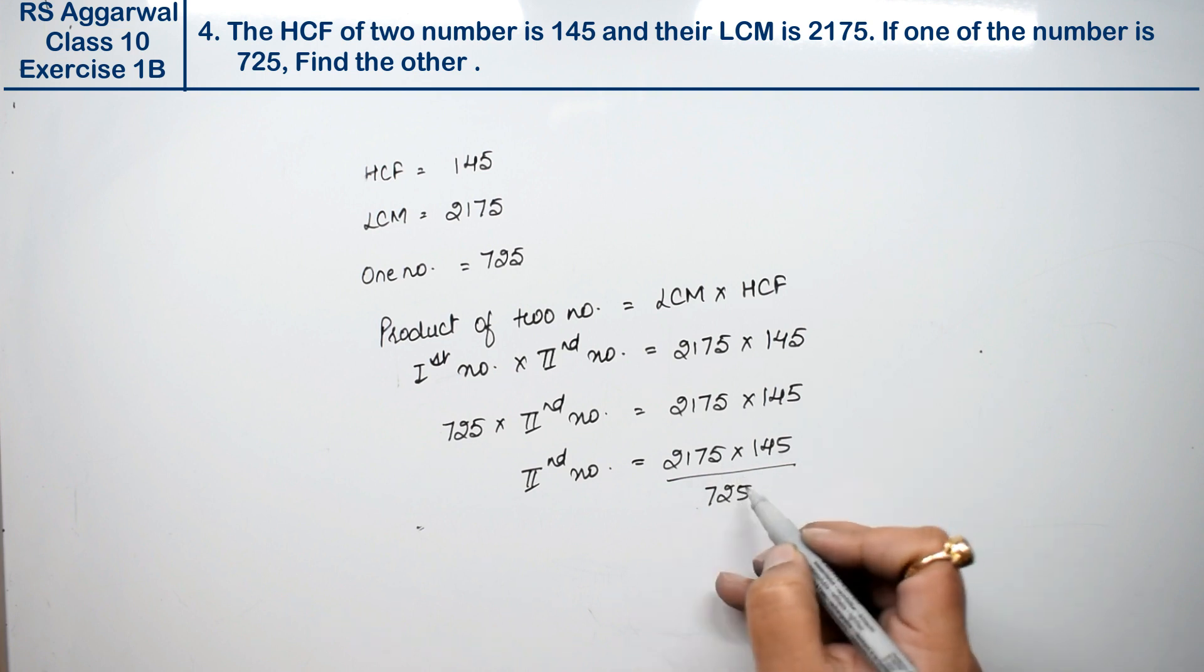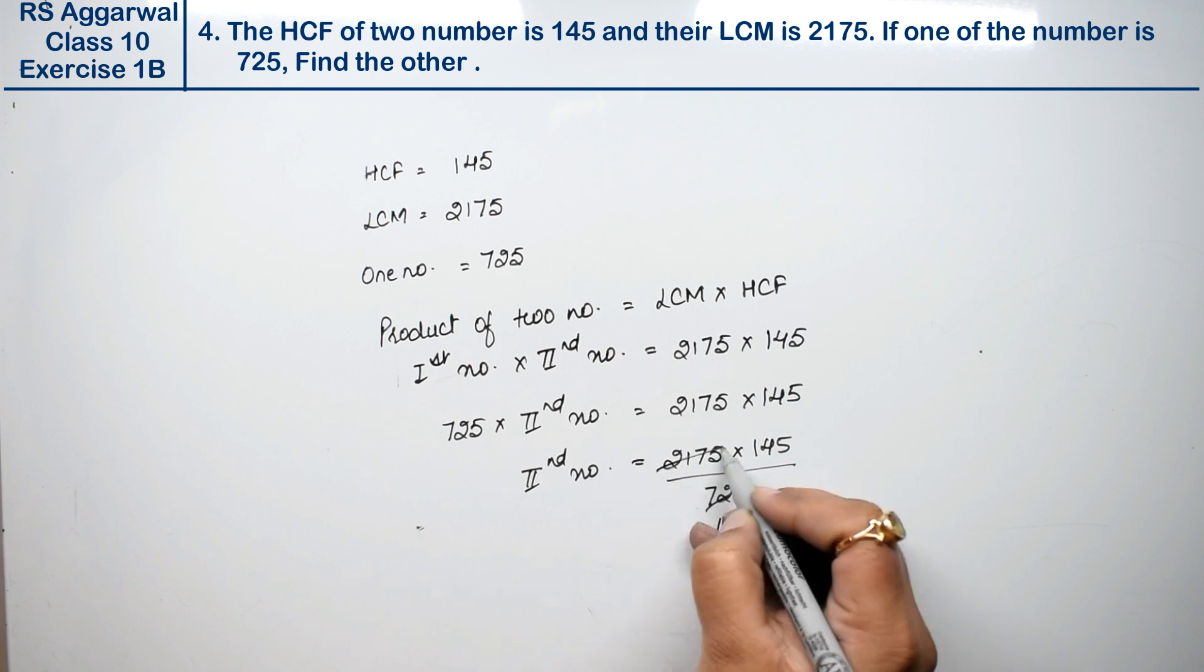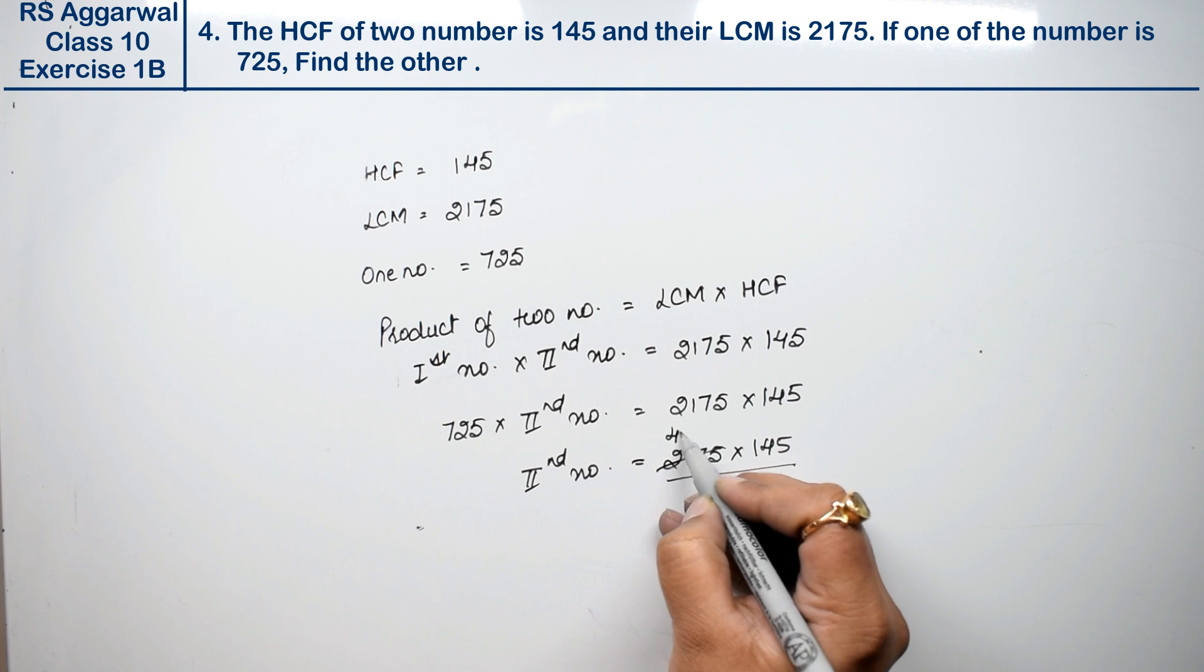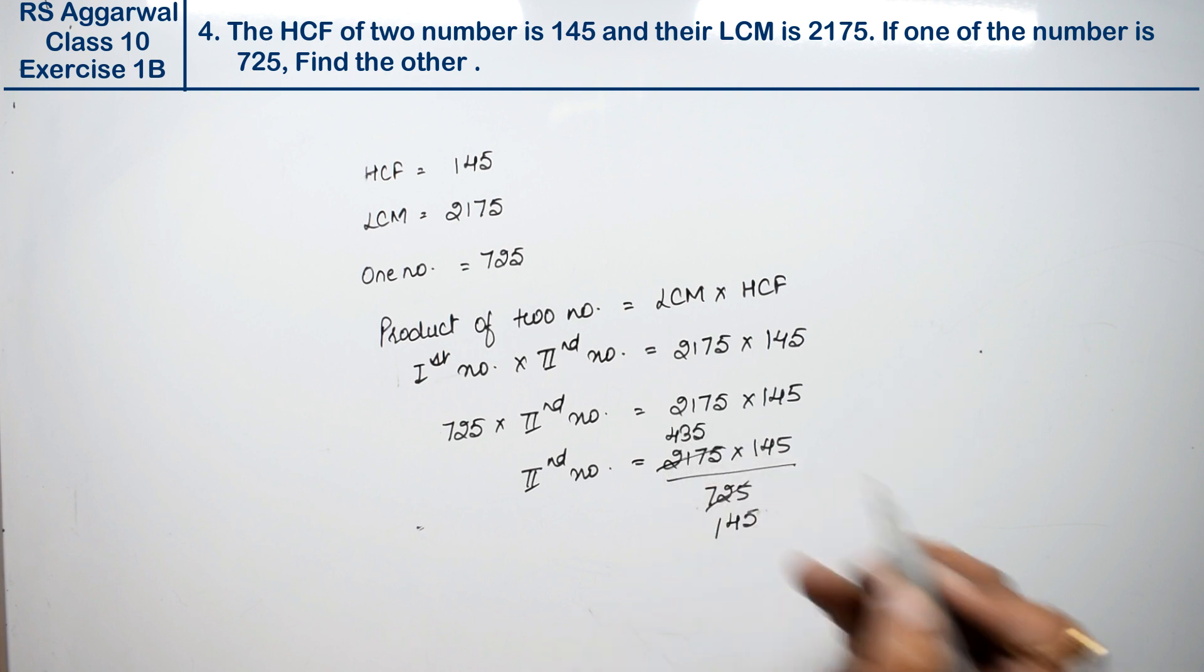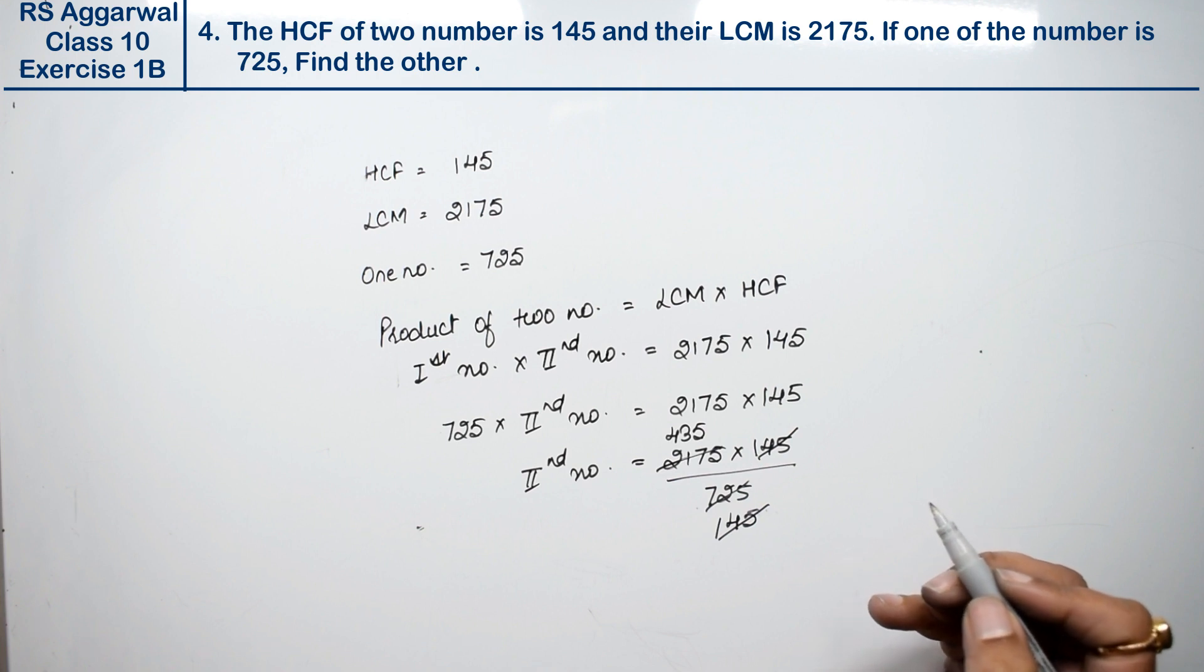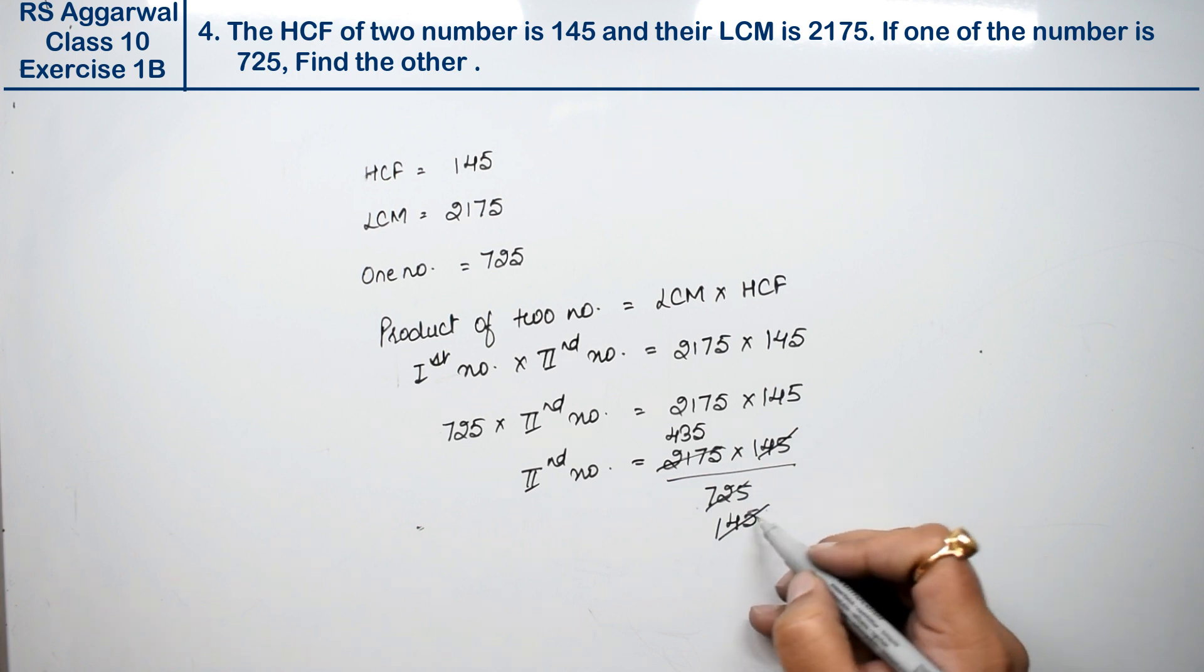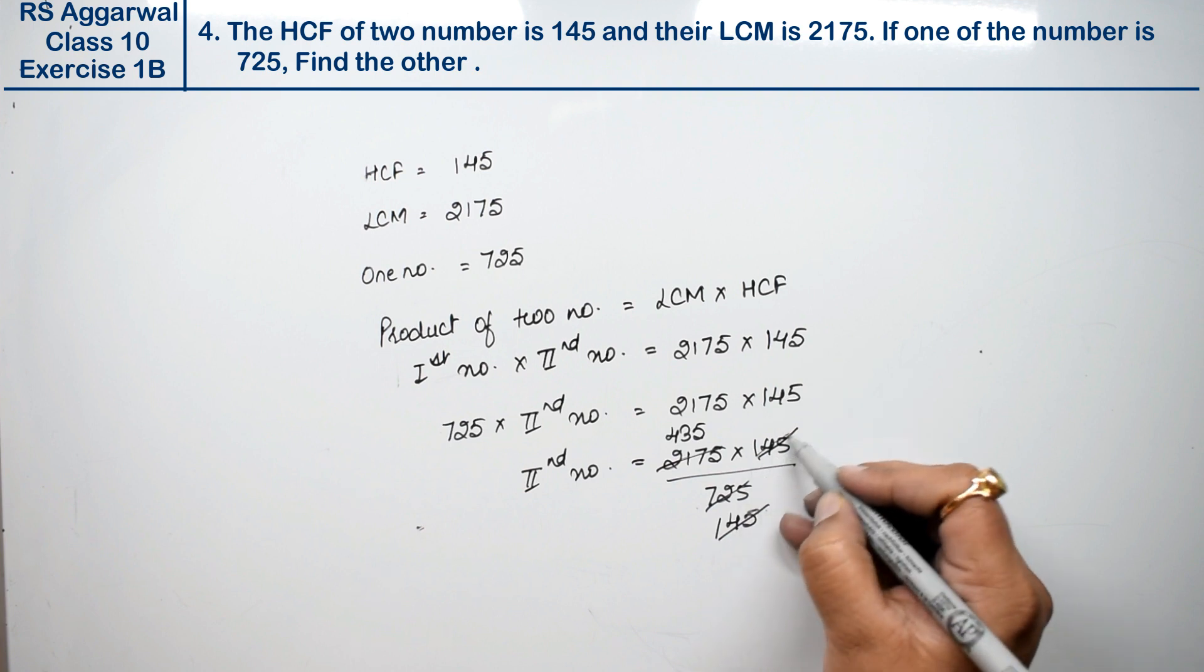Now dividing: 5 into 725 is 145, 5 into 2175... Simplifying by canceling common factors.